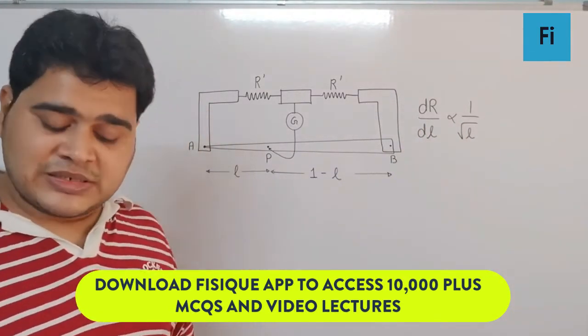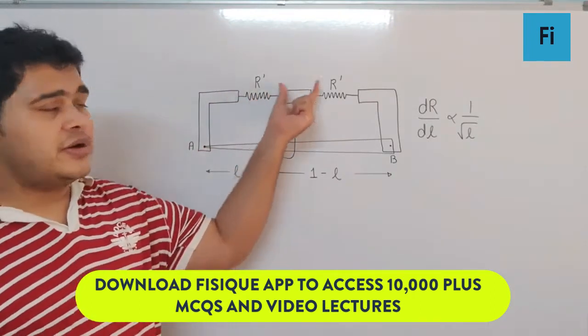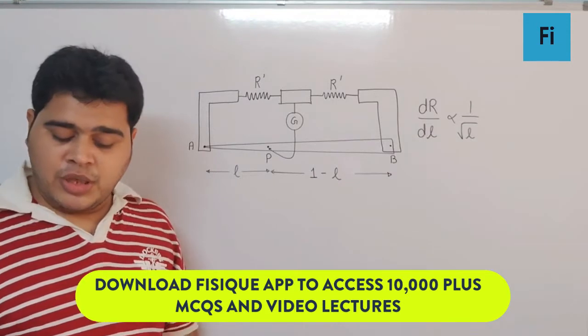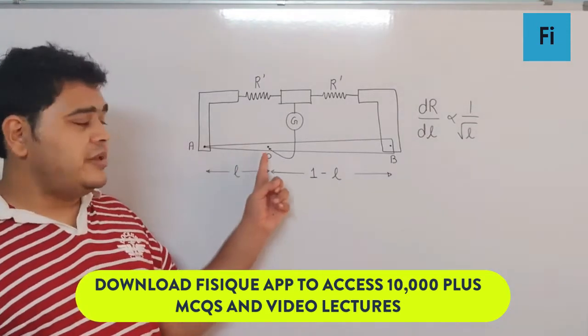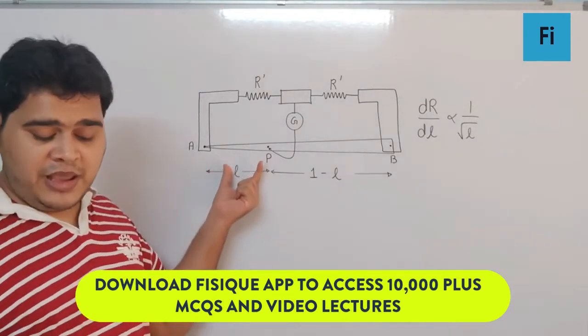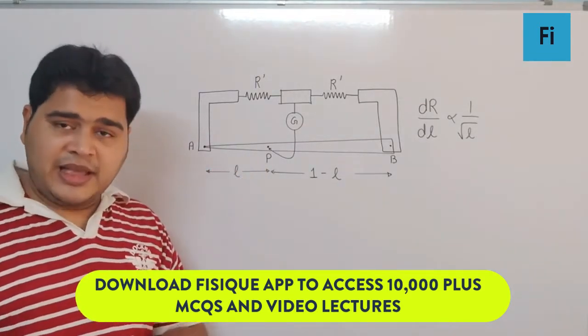Two equal resistances are connected as shown in the figure. The galvanometer has zero deflection when the jockey is at point P. What is the length AP? We want the length AP, which is nothing but L.